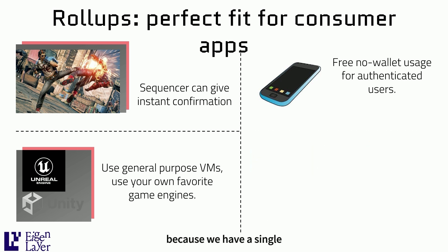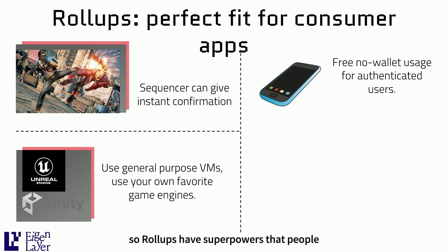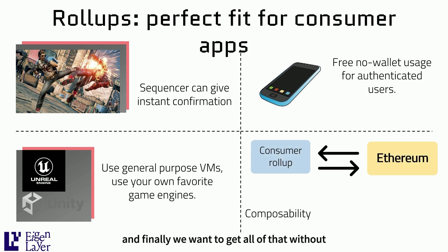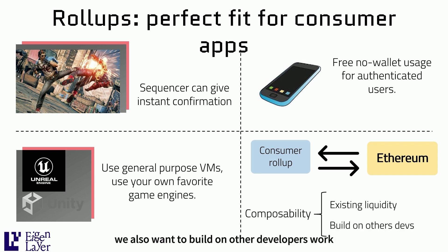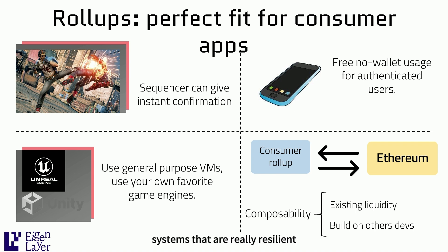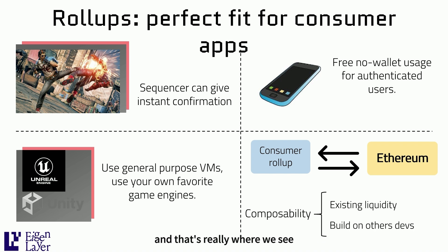We want to have free usage for authenticated users. This is not something you can do on a blockchain, because a blockchain has to ensure there is no spam, and the only way to ensure no spam is to impose a price. A price is a very non-discriminative mechanism — it cannot distinguish between an MEV bot spamming the chain and a real user. With a single central sequencer, the sequencer can exert subjective admission control. For example, if you already have a Facebook or Twitter ID, you should be able to log in and use the application without paying fees, even without a wallet. That's massively simplifying the user onboarding experience.